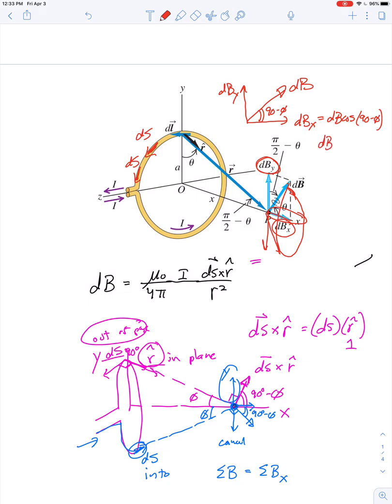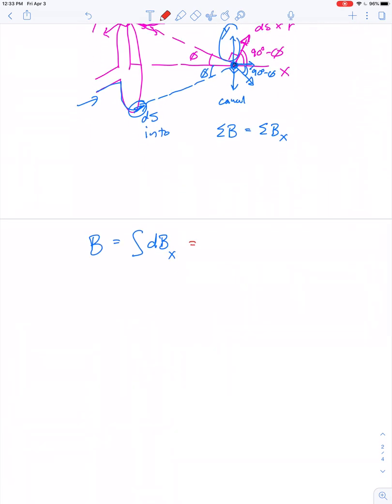So if we call this angle right here phi, sine is opposite over hypotenuse, so the sine of phi should be r opposite over hypotenuse, right? Big R over little r. So this is the same thing as the integral of db big R over little r.